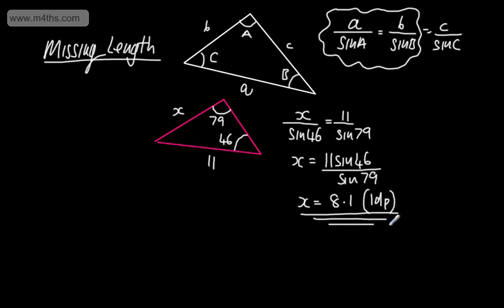So I've simply used the sine rule to find a missing length. Just set it up: this one over sine of this one is equal to this one over sine of this one. A question students often baffle themselves over is finding the third angle — remember, the sum of all angles in a triangle equals 180, so we do 180 minus 79 minus 46.